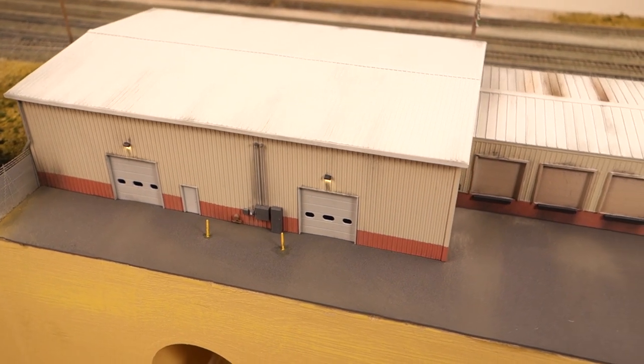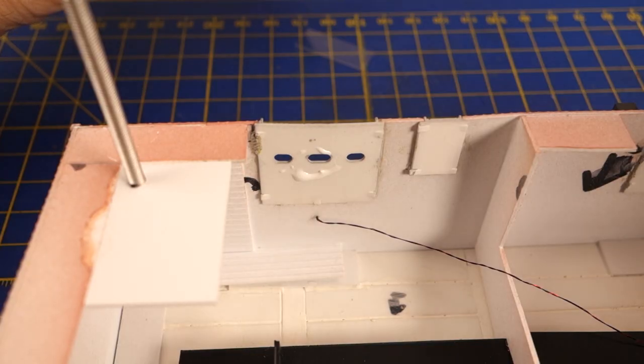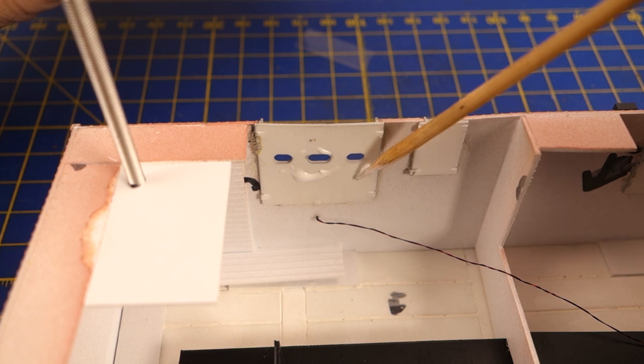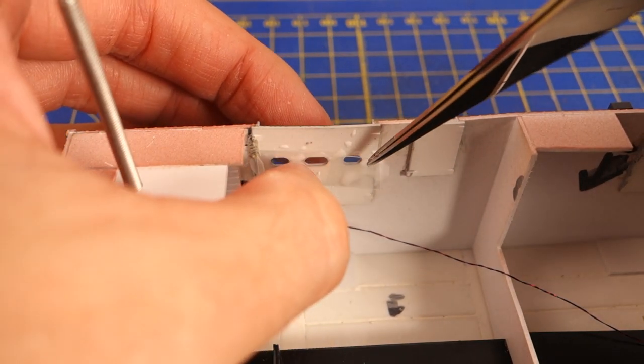Then I sealed everything with clear coat and glued the windows behind the forklift gates in place with canopy glue using evergreen 005 or 0.13mm thick clear styrene for the windows. This completes this project, at least for the moment.